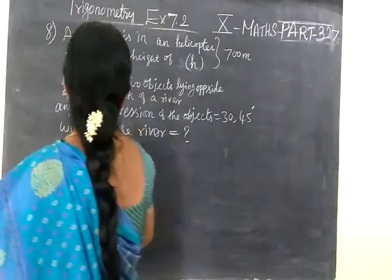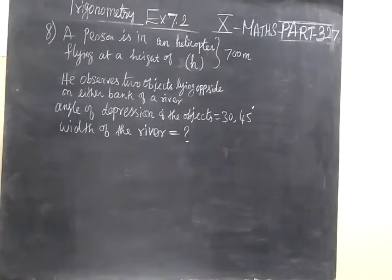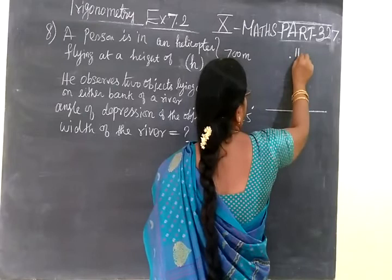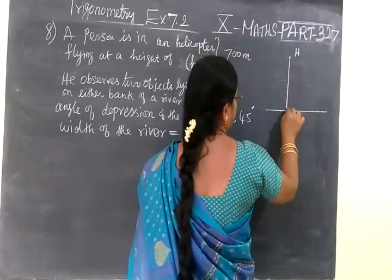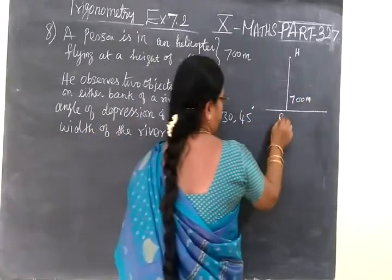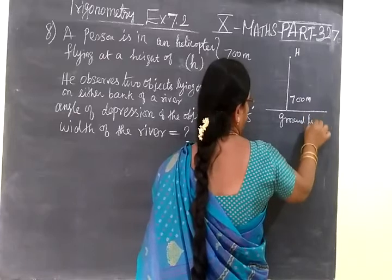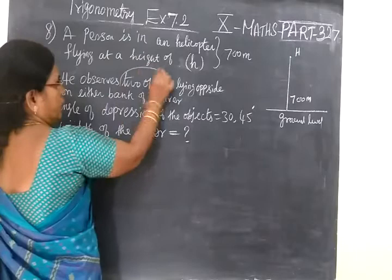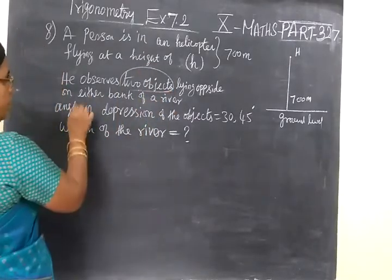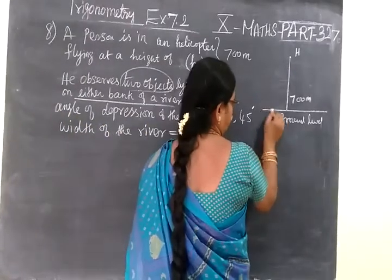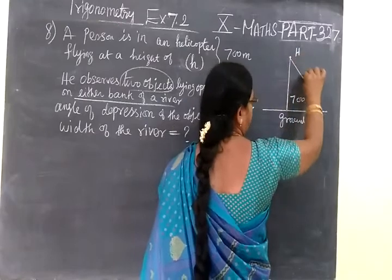A person is in a helicopter flying at a height of 700 meters from the ground level. He observes two objects lying opposite side on either side of the river, either bank of the river. Opposite side, one at one side and the other is at the opposite side.